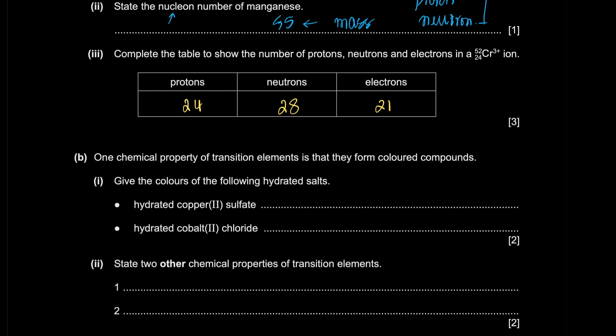Give the colors of the following hydrated salts. And this is something you have to memorize, but who doesn't know what copper sulfate looks like? Hydrated is going to be blue. And hydrated cobalt chloride. If you're confused, the data sheet tells you the color of cobalt is going to be green.